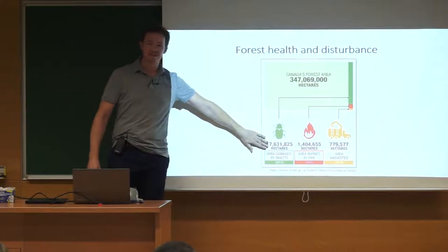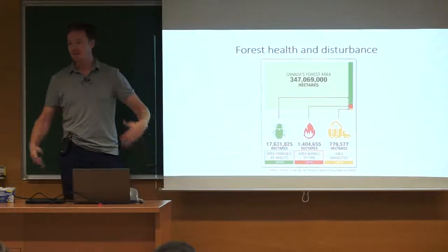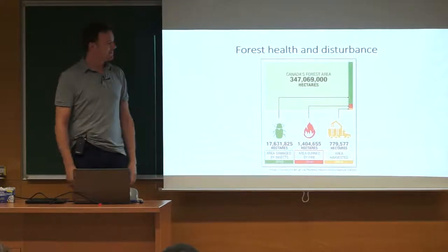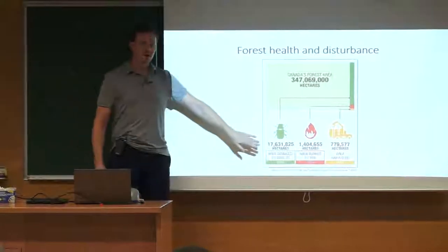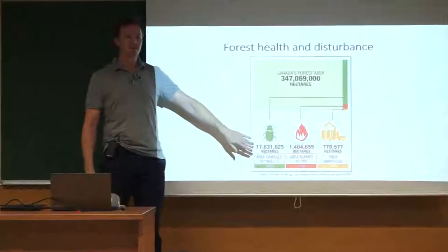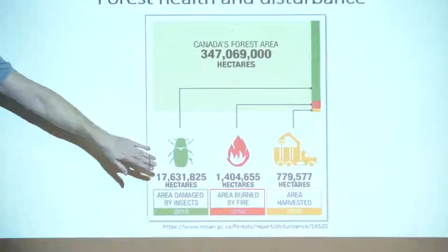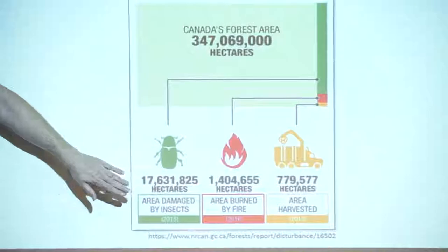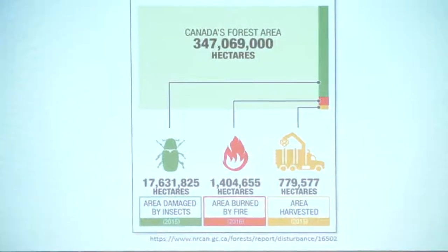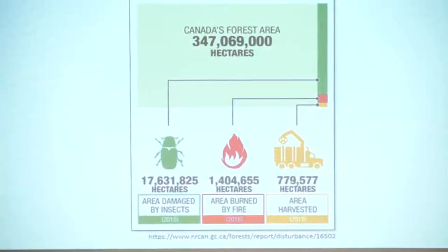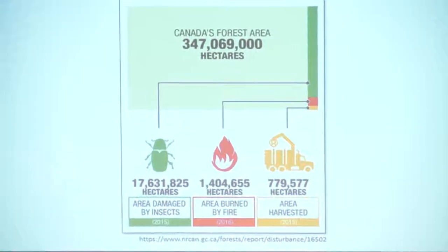This is just a snapshot from 2015-2016, and values will vary. But we've got lots of forest and a lot of disturbance. Most importantly, it's insects that are affecting the largest area — the most significant disturbance of the forest. I know fire people get angry when I say insects are more important, but just in the metric of area affected, insects are more important.